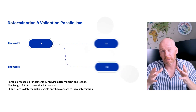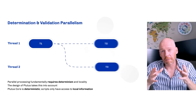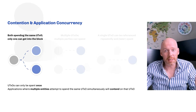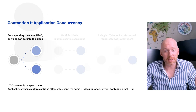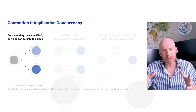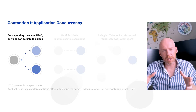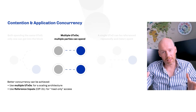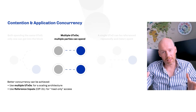Let's look now at contention and application concurrency. UTXOs can only be spent once. Applications or dApps where multiple entities or actors try to spend the same UTXOs simultaneously will contend on that UTXO and ultimately be blocked. When you're building on Cardano, better concurrency can be achieved by using multiple UTXOs and exploiting that parallelism — you can build a scaling architecture that's massively parallel and allows you to service all of your users at the same time. Coming in June, reference inputs will allow read-only access to datums that live on UTXOs to multiple apps at the same time.